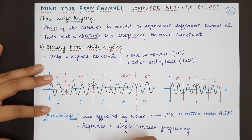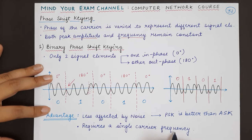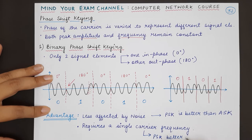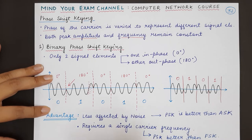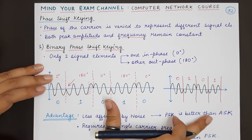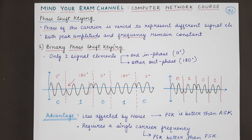Also, phase shift keying requires a single carrier frequency, which makes PSK better than FSK. In this way, we can see that phase shift keying is better than both techniques that we have seen previously, which are amplitude shift keying and frequency shift keying. Now, in the last part of this lecture, we will be studying about quadrature amplitude modulation.